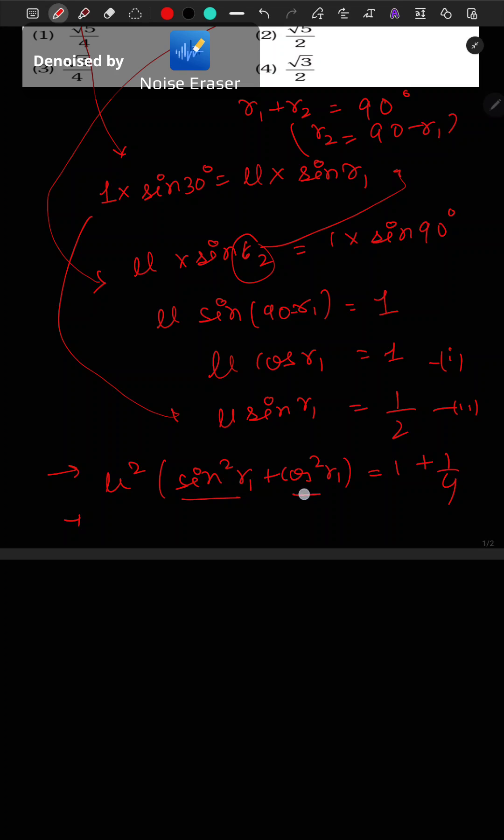Since sin² θ + cos² θ = 1, we have mu² = 5/4. Therefore, mu = √5/2 is the answer.